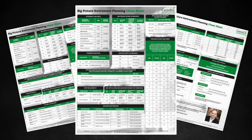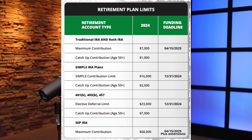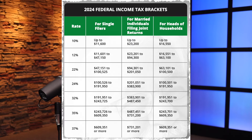There are now three pages to it. The first page is dedicated to retirement planning, so you'll see the retirement plan limits for all of the different types of retirement accounts. There's also a section on the 2024 federal income tax brackets that list the thresholds for single, married filing jointly, and heads of household.